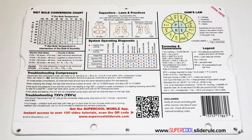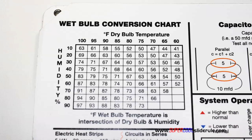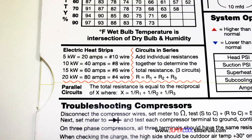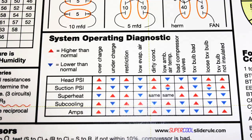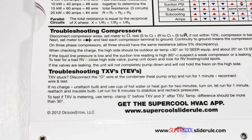It has capacitor rules and practices, a wet bulb conversion chart, how to perform computations on series or parallel circuits, an electric heat strip guide, and a complete system troubleshooting diagnostic chart.